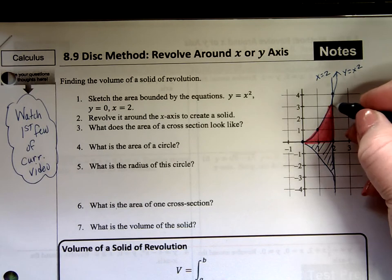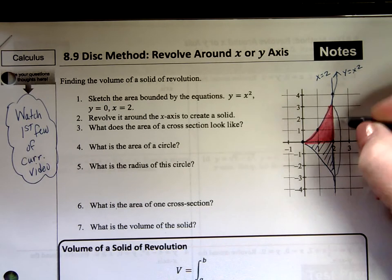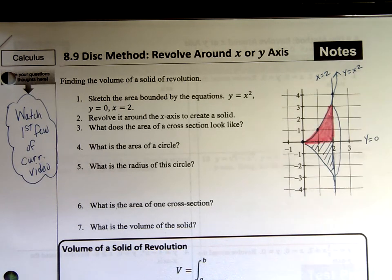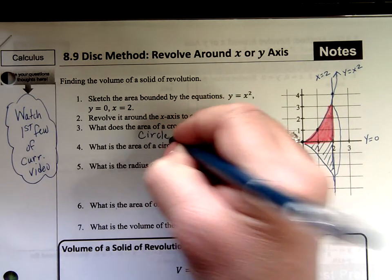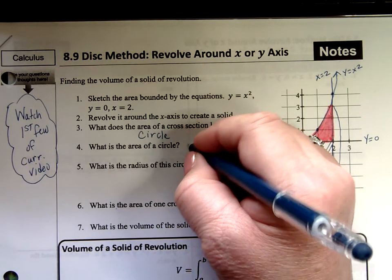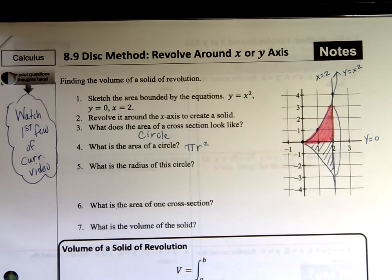What it actually does is it creates a circular disk when I revolve it around. It's like a circle. So what does the area of the cross section look like? It looks like a circle. What's the area of a circle? We know the area of a circle is pi r squared.